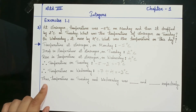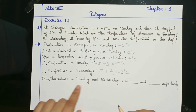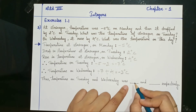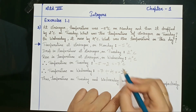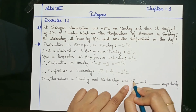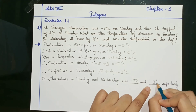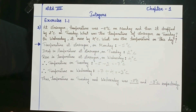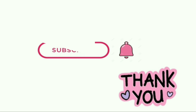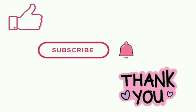So finally, the temperature on Tuesday and Wednesday was minus 7 degrees Celsius and minus 3 degrees Celsius respectively. I hope you have understood the sum. Thank you. Keep watching. Please like, subscribe, and press the bell icon to get notifications of upcoming videos.